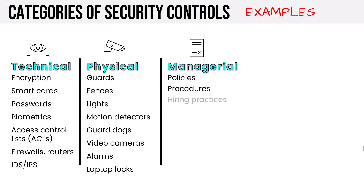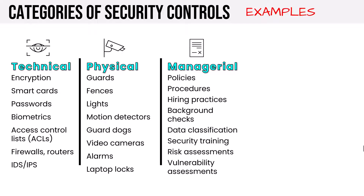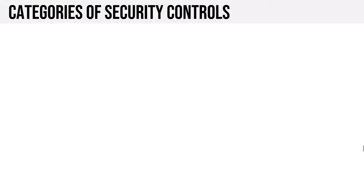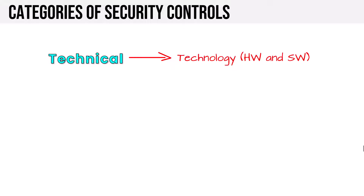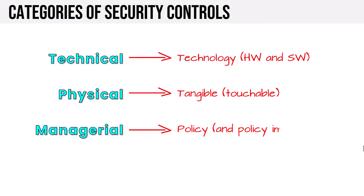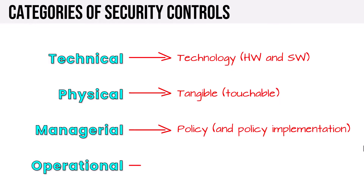For managerial controls: policies and procedures, hiring practices, background checks, data classification, security training, risk assessments, and vulnerability assessments — all practices laid out in policies the organization follows. The operational category includes conducting awareness training, configuration management, and media protection — the doing. To summarize: technical is the implementation of hardware and software; physical is tangible and touchable; managerial is policy and procedure based, the processes documented; and operational is people doing stuff.